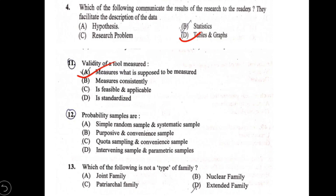Next question: probability samples are — option A: simple random sample and systematic sample; B: purposive and convenient sample; C: quota sampling and convenient sample; D: intervening sample and parametric sample. Option A is correct.